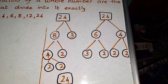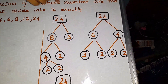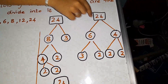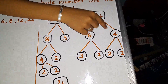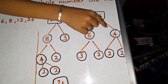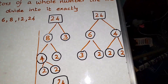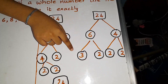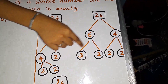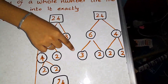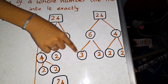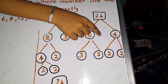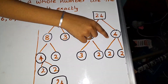Now I am going to see the second way. 6 times 4 equals 24. Both 6 and 4 are not prime numbers, so we can factorize them further. 3 times 2 equals 6. 3 is a prime number and 2 is also a prime number, so we have to stop there.